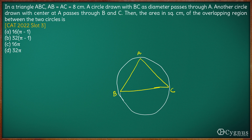This would be the circle with BC as diameter and it passes through A. Now, since BC is the diameter and the diameter is making this angle on the circle, we know the diameter subtends an angle of 90 degrees on the circle. So this angle here is going to be 90 degrees — this is going to be a right triangle, and angle BAC is going to be the right angle.